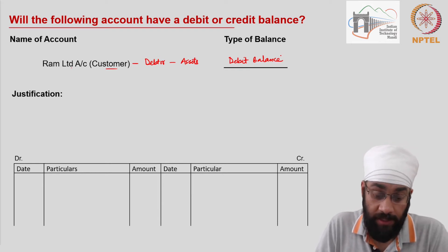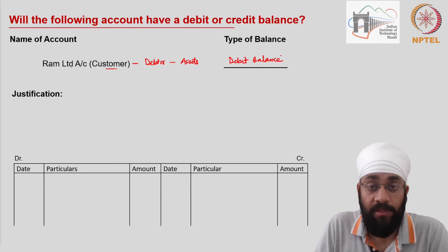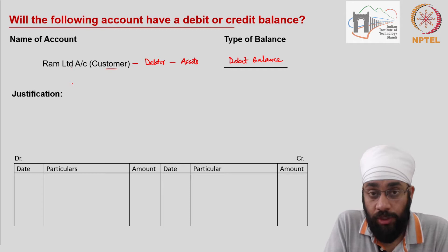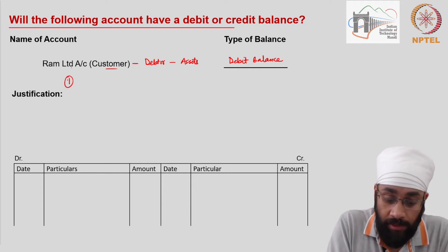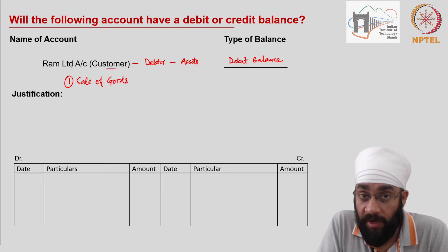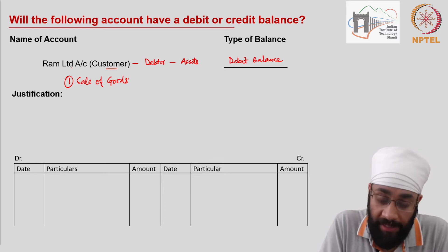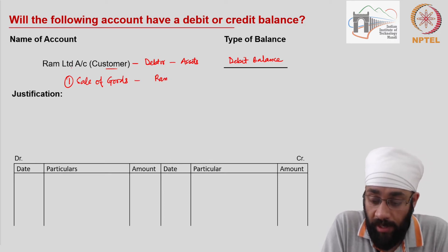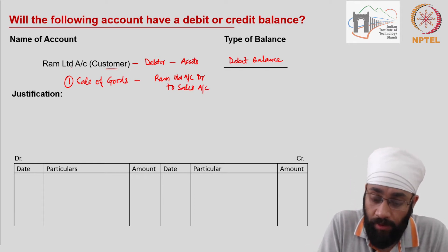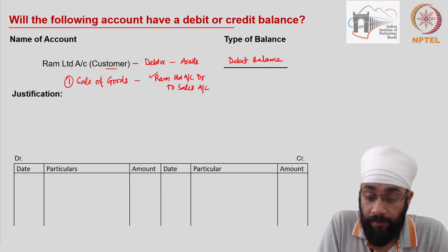Now let's try to justify this by looking at various kinds of transactions that a business could have with its customers. The first transaction would be a sale — a sale of goods on credit. That's how a customer becomes a debtor. So the transaction is: Ram Limited's account debit to sales account. This is the transaction for a credit sale.